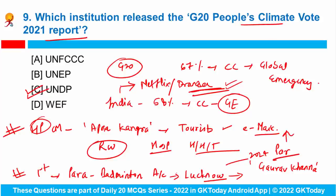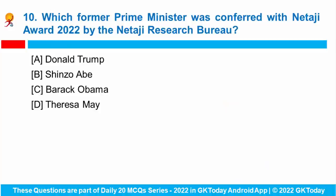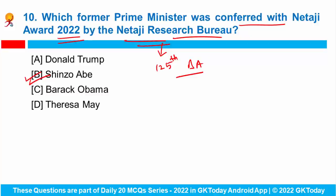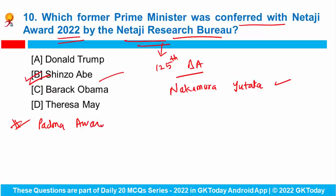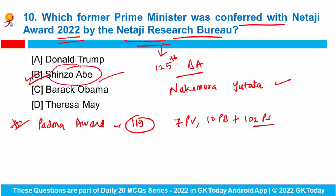Question number ten: former Prime Minister of Japan Shinzo Abe was conferred with the Netaji Award 2022 by the Netaji Research Bureau on the 125th birth anniversary of Netaji Subhash Chandra Bose. Consul General of Japan Nakamura Yutaka received the honor on behalf of Shinzo Abe. Padma Awards have recently been conferred on 119 recipients, comprising 7 Padma Vibhushan, 10 Padma Bhushan, and 102 Padma Shri awardees. Shinzo Abe also won the Padma Bhushan 2020 under the public affairs category.